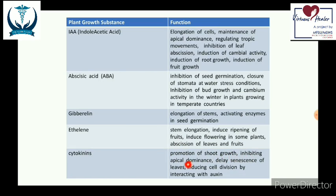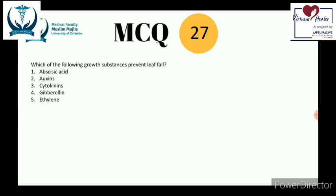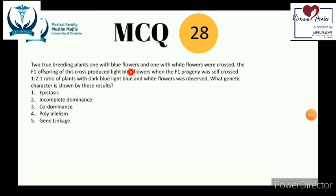Cytokinins are responsible for promoting shoot growth. An important difference: indoleacetic acid maintains apical dominance whereas cytokinins inhibit apical dominance. Crucially, cytokinins delay the loss or senescence of leaves. Therefore, the answer to question 27 — which growth substance prevents leaf fall — is number 3, cytokinins.